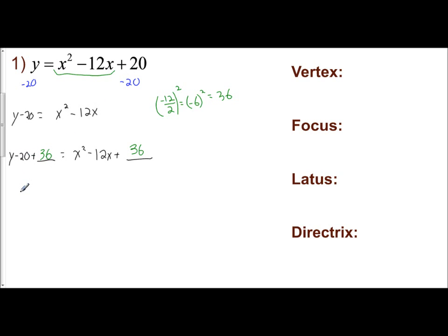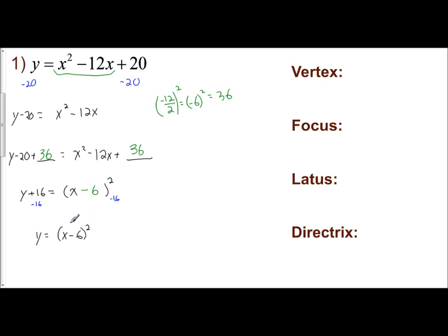Negative 20 plus 36 is positive 16, so I have y plus 16 equals. We created a perfect square trinomial, so let's write it as a perfect square. We squared negative 6, so that goes inside our parentheses: y plus 16 equals the quantity x minus 6 squared. Then I solve for y to get standard form by subtracting 16 from both sides, giving me y equals the quantity x minus 6 squared minus 16. There's my standard form.